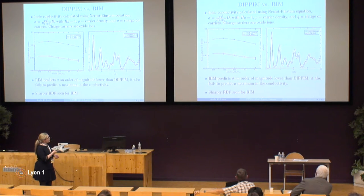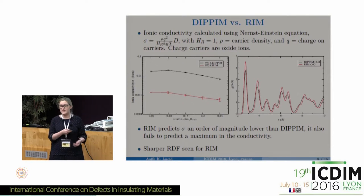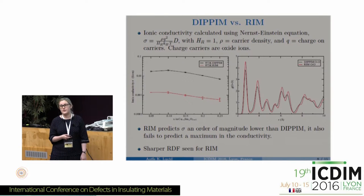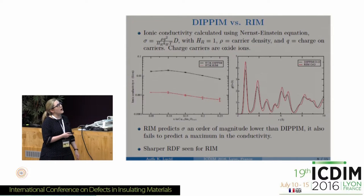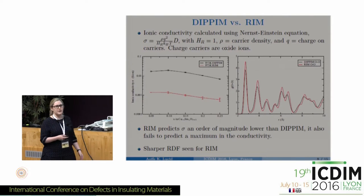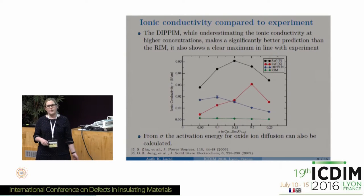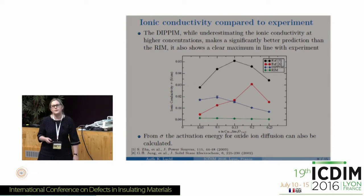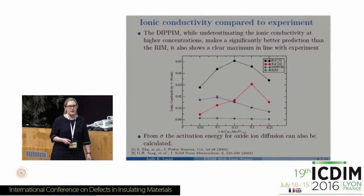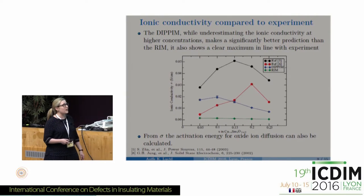In terms of structure, an oxygen-oxygen RDF for both models shows no significant structural differences, though sharper peaks are seen for the rigid ion model as expected from the different dynamics. Comparing results to experiment, two experimental values are shown representing the level of disparity in the literature for conductivity values in doped ceria. There is considerable disagreement depending on how the material is grown, how conductivity is measured, and whether grain boundaries are properly separated.